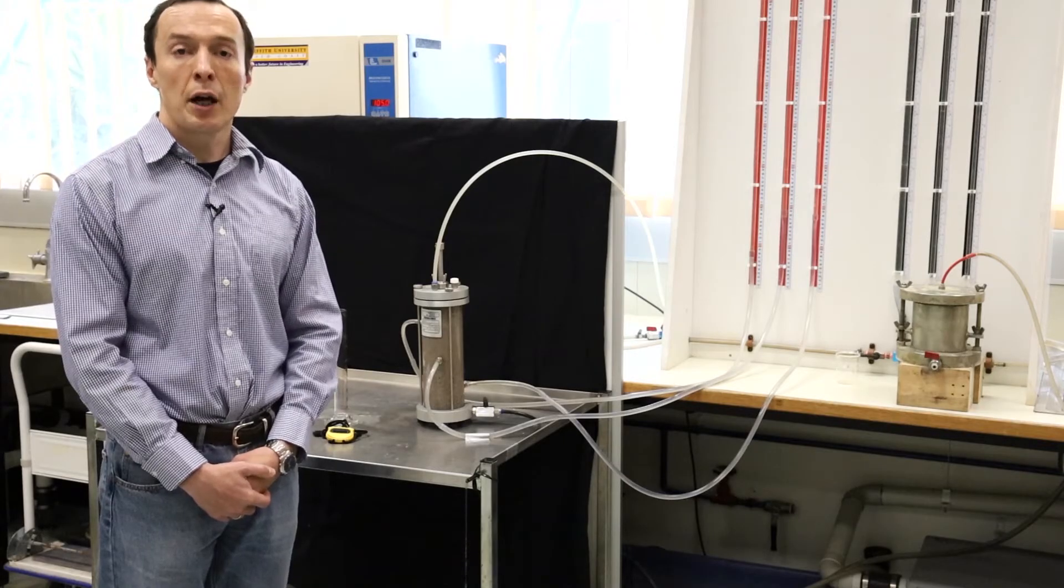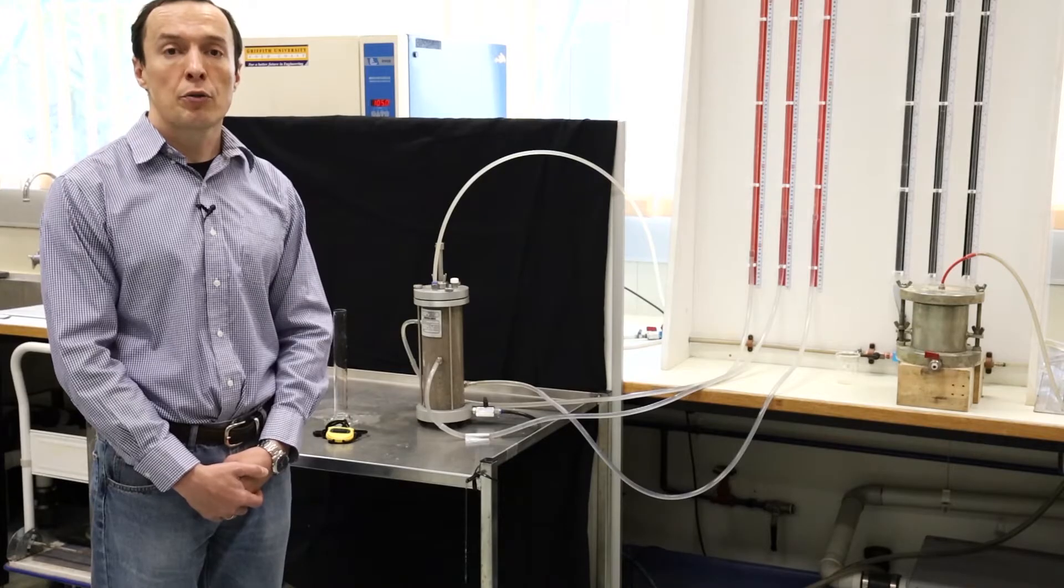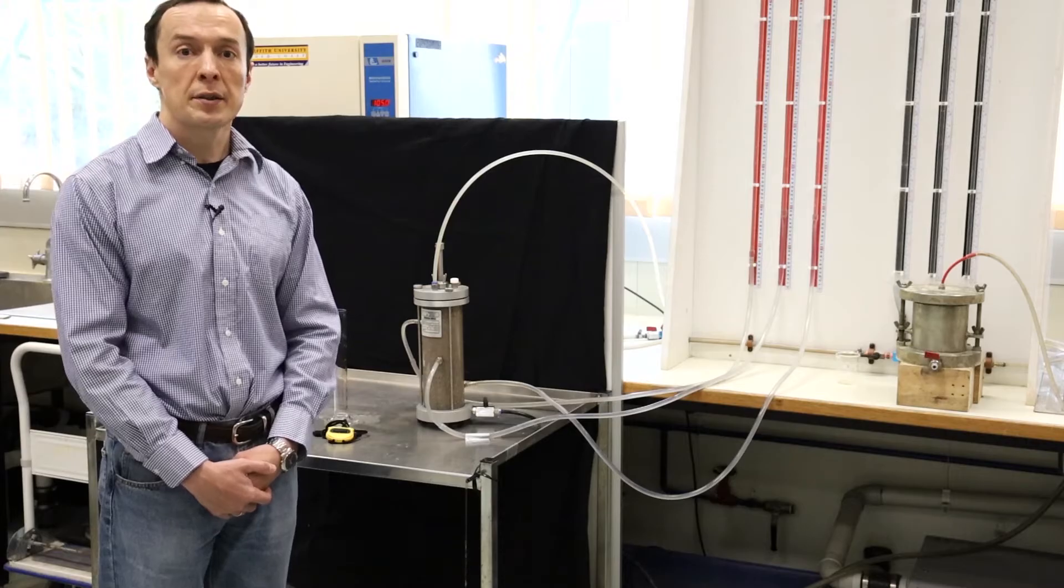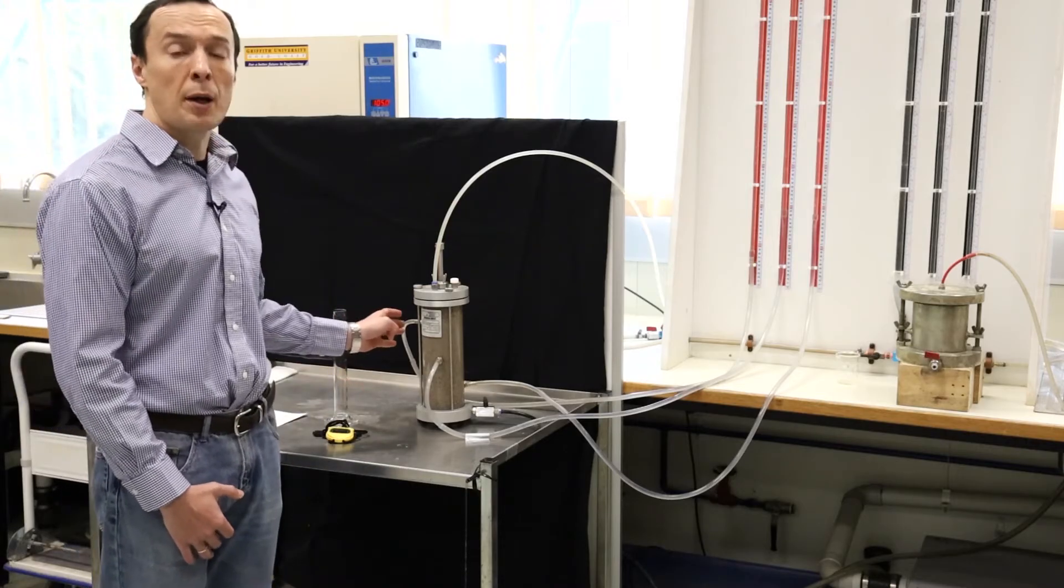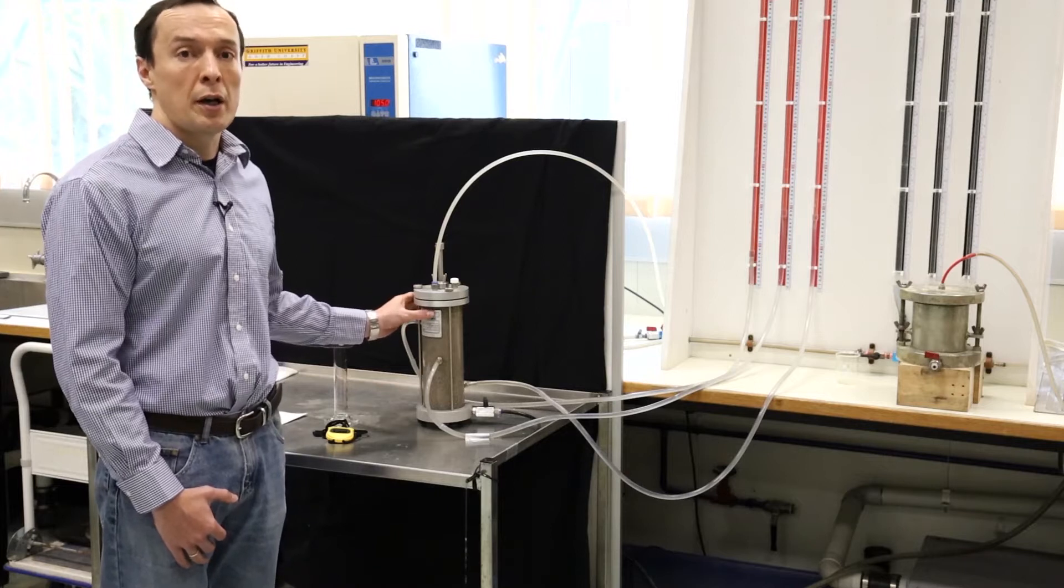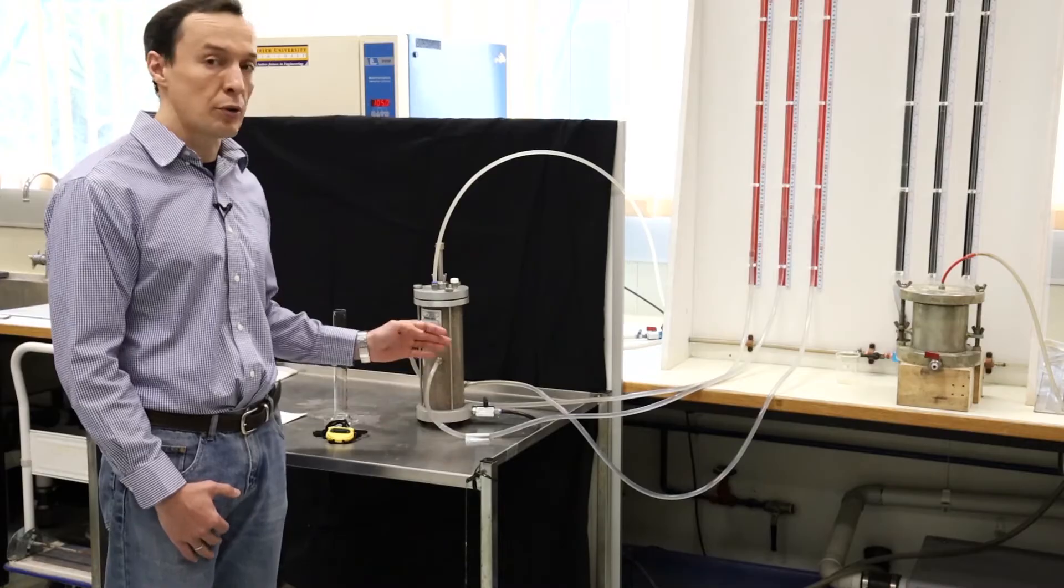To find out how fast water flows in the soil we can do two different tests. The first test that we will do today is a constant head test which is shown here in the setup. We do this test for sand, for sandy material in which water flows very quickly as you can see here water flows through the soil.